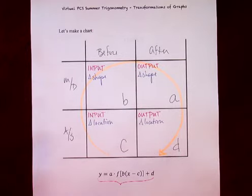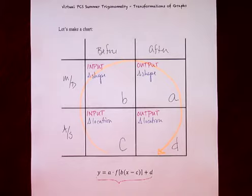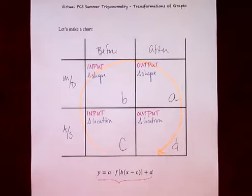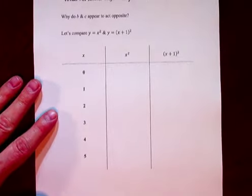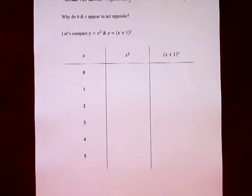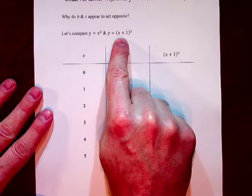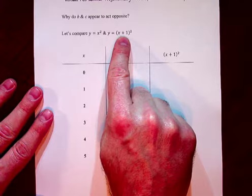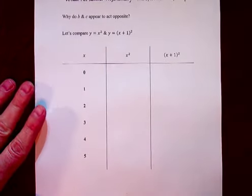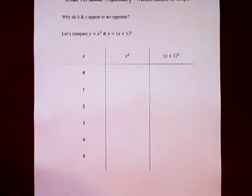There are reasons why I focus on the order that transformations are done, and it's important to parse this out because this is the language I will use every time we talk about graphs. Let's talk about B and C, because they act differently than A and D. Students are often told B and C act oppositely, but I want you to understand why. So let's compare x² and (x+1)² to see numerically why a plus one moves us in the negative direction.